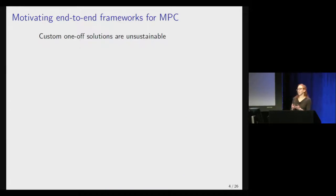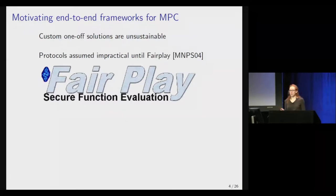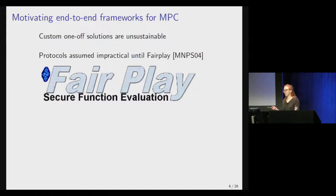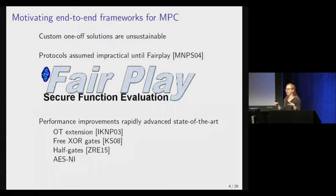However, traditionally MPC applications required a team of expert cryptographers to build a custom MPC engine tailored to that specific use case. If we want to see wider adoption of MPC in practice, we're going to need better general-purpose tools. MPC was first introduced in the 1980s but was assumed to be too inefficient for practical use until 2004, when the first general-purpose framework came out. That started a rapid wave of development, with performance improvements both algorithmically and in implementations rapidly advancing the state of the art.